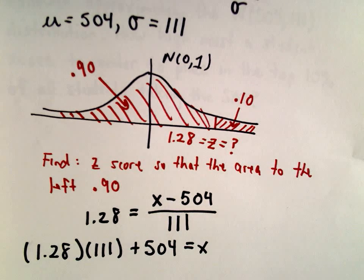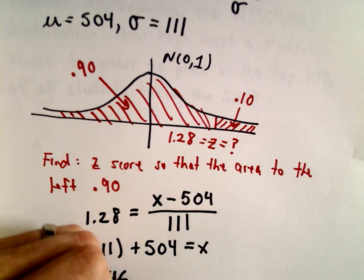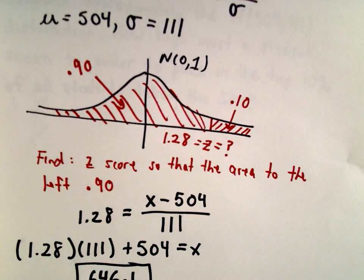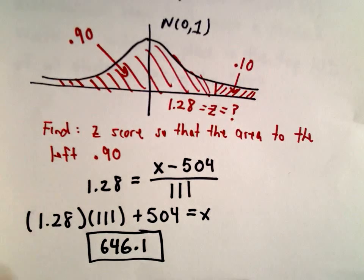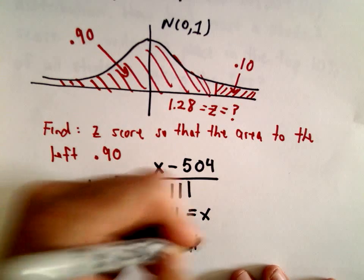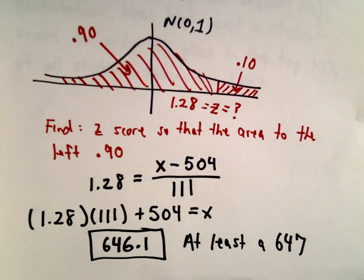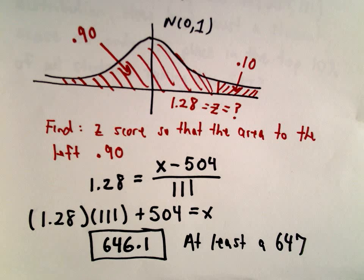And after solving this I'm getting 646.1. Scores on the SAT are not in terms of decimal points, they're only whole number values, so you would have to make at least a 647 on that SAT verbal test to be in the top 10%.